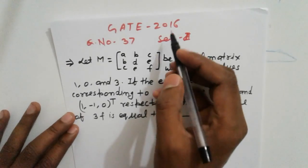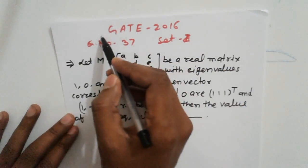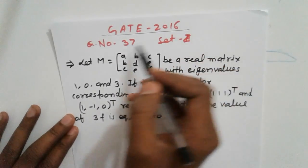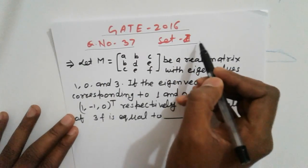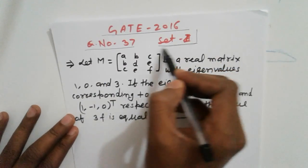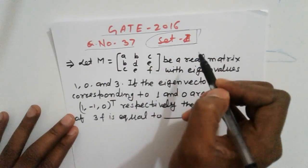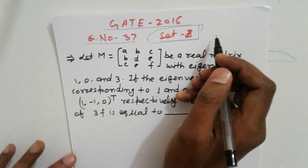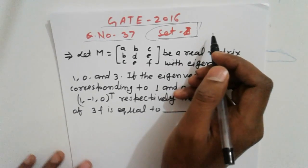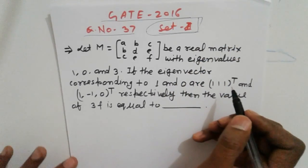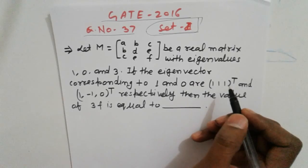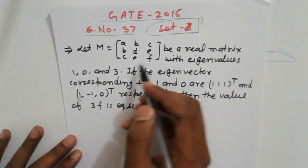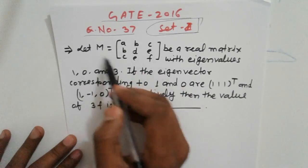Hello friends. Today another taken problems, get 16 question number 37 set 1, related to the problem of diagonalizable matrices. This is a very important problem, so take care. Please subscribe my channel, like, share, and tell friends for latest updates.